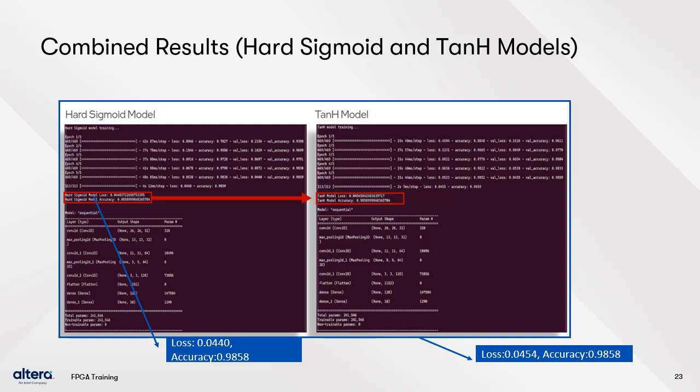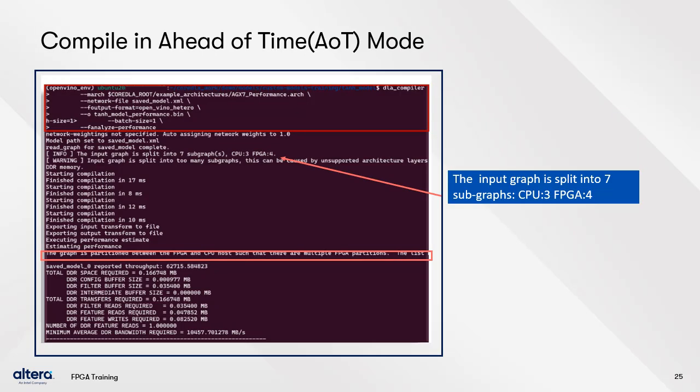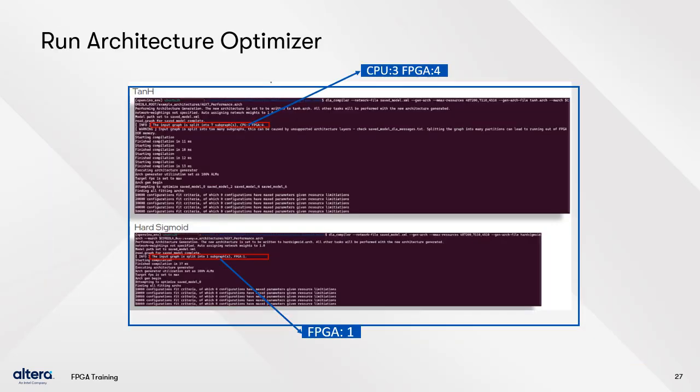Next, we run both the TanH and hard sigmoid models through the model optimizer, converting them to intermediate representation format to allow comparison of heterogeneous and homogeneous solutions. After converting both models to IR, we compile each model in ahead-of-time mode. The output of the TanH model is shown; the AOT compile of the hard sigmoid graph shows in the performance estimator that the original graph was faster, but this is only an estimate — the actual throughput will be better on the new graph once we run the architecture optimizer.